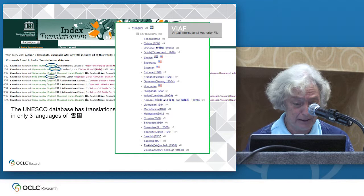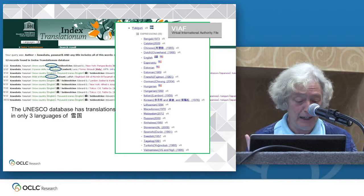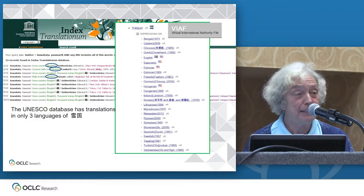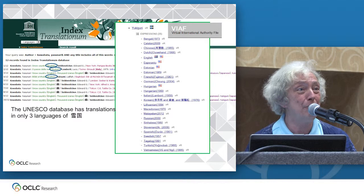The UNESCO database has translations of Kawabata's Yugaguni in only three languages: English, Italian, and Arabic. And VIAF, with the XR records data mined from libraries' contributions to WorldCat, supplementing those from VIAF contributors, has a list of translations in 25 languages. These are all part of the contributions you and yours have made to WorldCat.